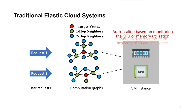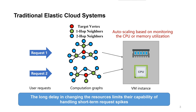To deal with workload fluctuations, the system monitors metrics such as CPU or memory utilization and applies a threshold-based scaling policy. However, the long delay in changing resources limits their capacity for handling short-term request spikes.